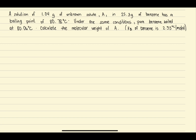First, let us identify the given. We are given the weight of the solute, which is equal to 1.04 grams. And then we have the weight of the solvent, which is equal to 25.3 grams of benzene. The chemical formula for benzene is C₆H₆.